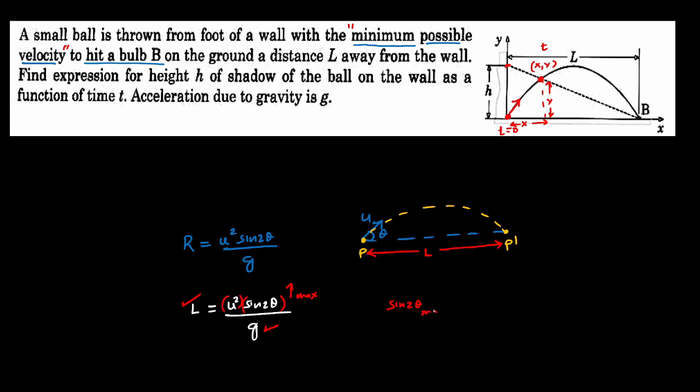Sin 2 theta maximum value, here it can take the value of 1. Suppose if it is taking 1, then which is indirect information that we are projecting at an angle 45 degrees. So we are projecting at an angle 45 degrees. So once we know this, then we can easily solve this problem. So let us complete this problem.